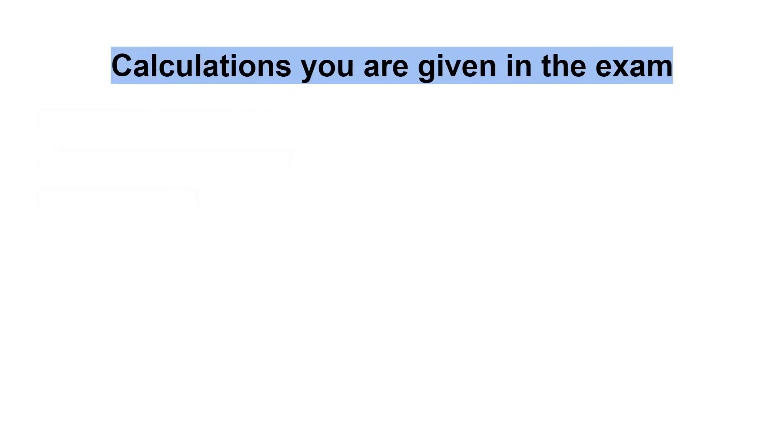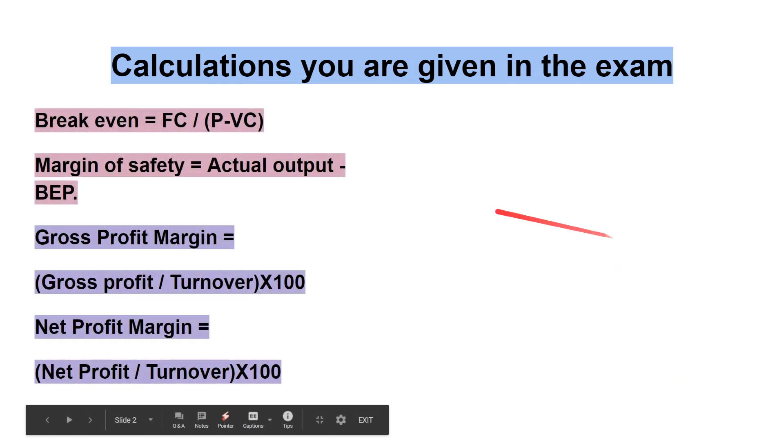Second slide. These are the ones you're given in the exam, let's run through these quickly. First up, break-even: fixed cost divided by the contribution, which is price minus the variable cost, and that is the individual variable cost. Then we've got margin of safety, which is the actual output minus the break-even point.